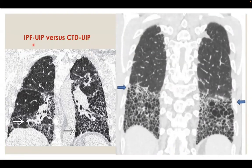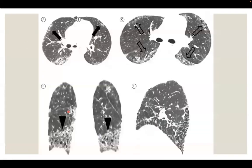In IPF UIP, there is extension of honeycombing to the upper lobes with an apico-basal gradient. To summarize, the four signs — anterior upper lobe sign, four-corner sign, straight edge sign, and exuberant honeycombing sign — suggest that the UIP pattern is secondary, most likely secondary to connective tissue disease.